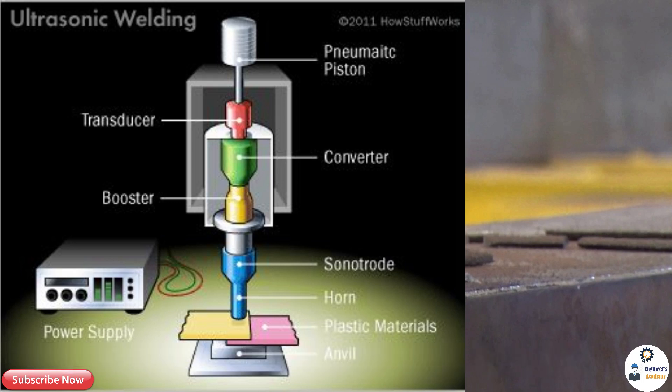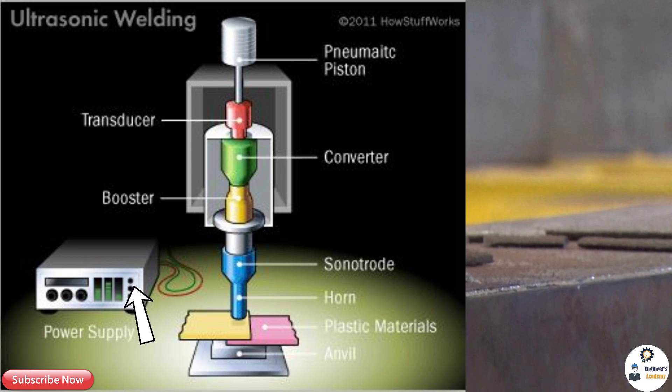Now let's talk about the equipments used in ultrasonic welding. First is the power supply. Ultrasonic welding needs a high frequency and high voltage power supply. This power is needed by the transducer to generate vibrations.